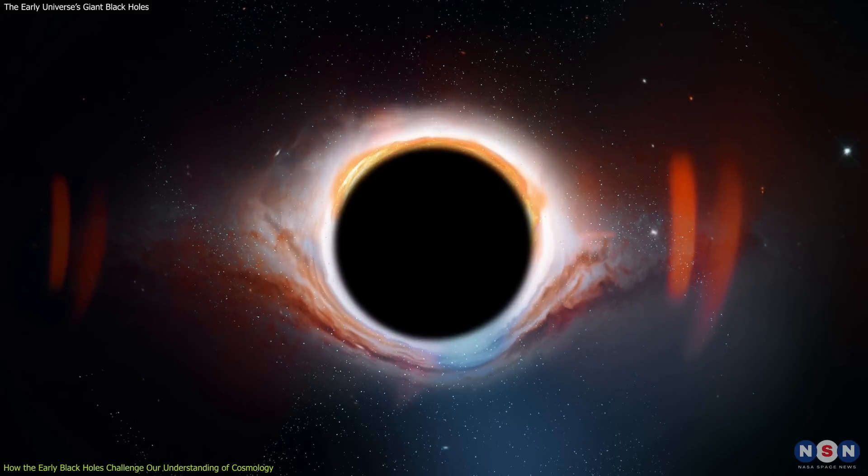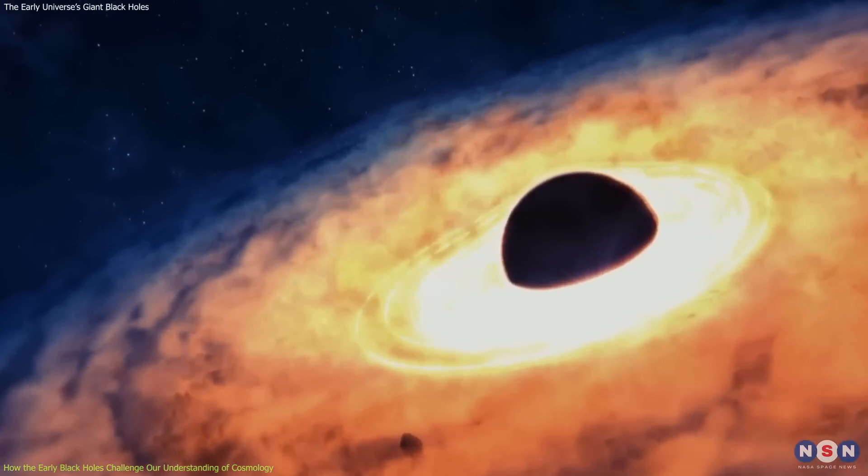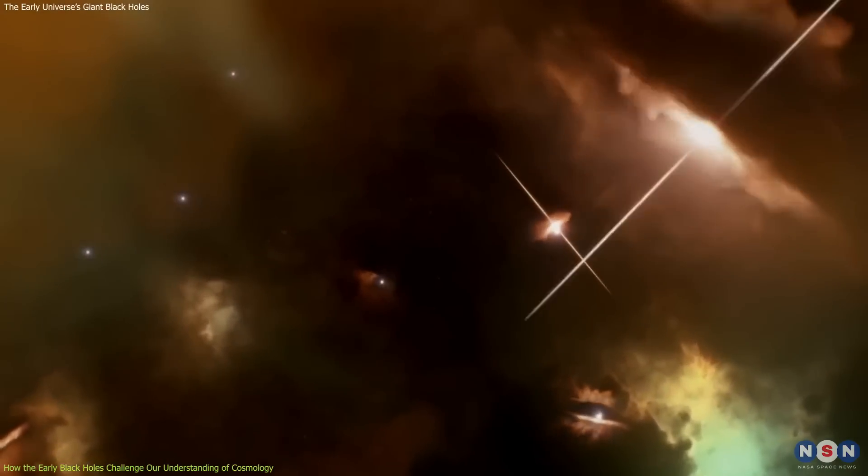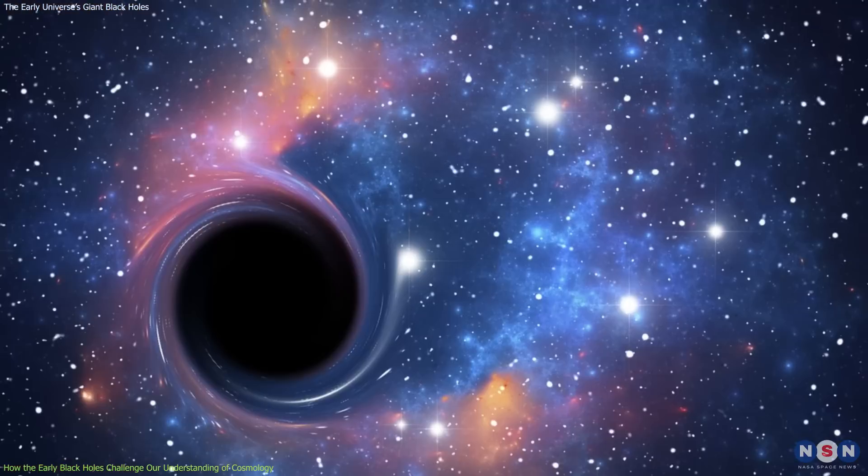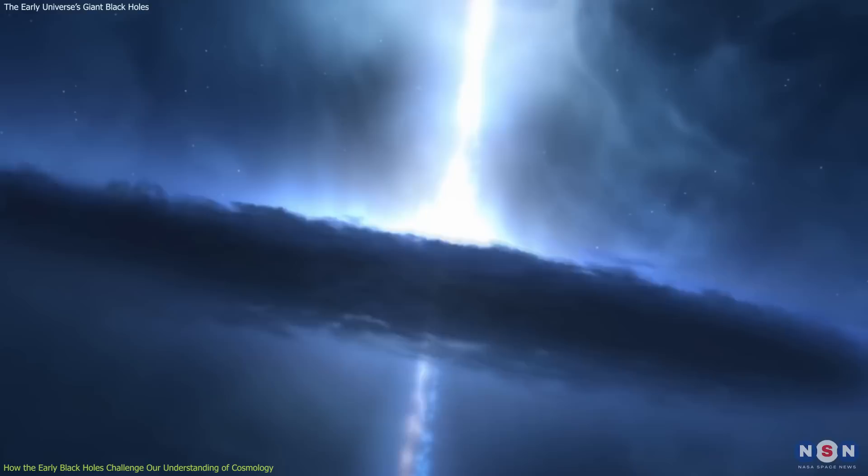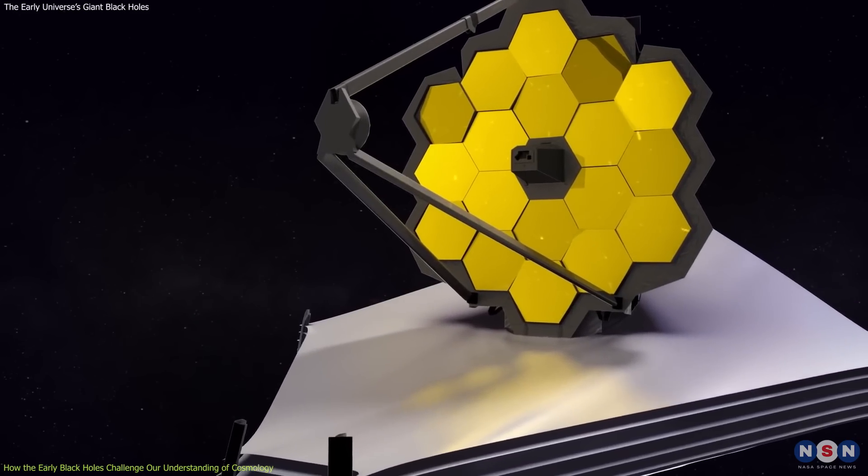But these possibilities are not without problems either. For example, primordial black holes are very hard to detect, and their abundance and distribution in the early universe are uncertain. Intermediate-mass black holes are also very rare and hard to detect, and their formation mechanisms are not well understood. This is where James Webb comes in handy.